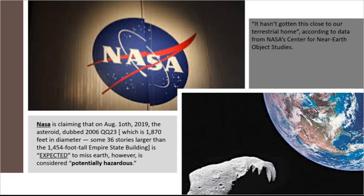NASA is claiming that on August 10th, 2019, yes that's next week, the asteroid dubbed 2006 QQ23, which is 1870 feet in diameter and some 36 stories larger than the 1450 foot tall Empire State Building, is expected to miss Earth, however, is also considered potentially hazardous.